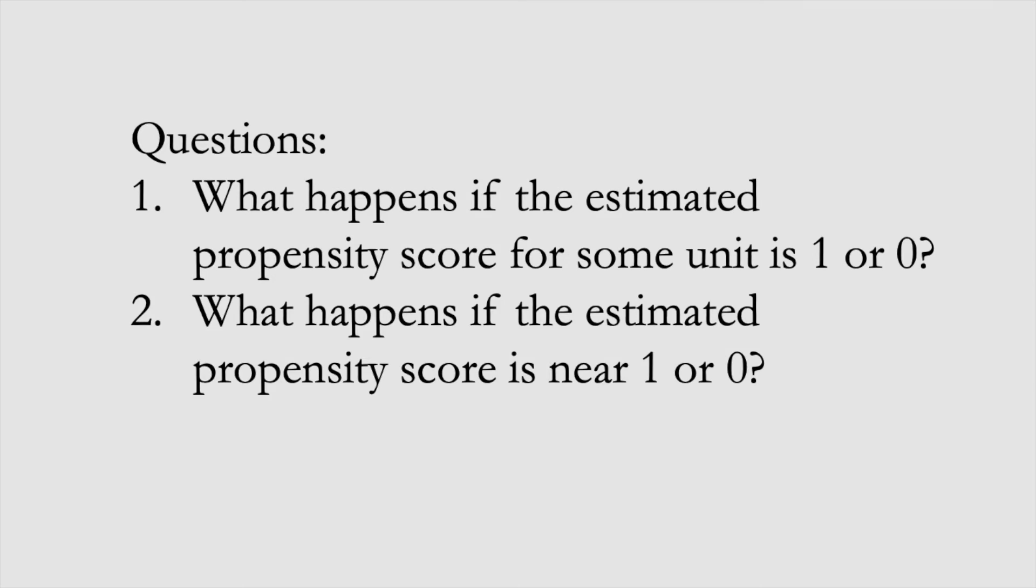This then leads me to two questions. First, what happens if the estimated propensity score for some unit is either 1 or 0? Similarly, what happens if the estimated propensity score isn't quite 1 or 0, but it's near 1 or 0?